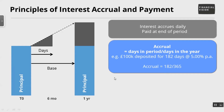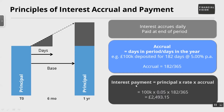Let's say you had £100,000 on deposit for six months, and that six month period happened to have 182 days in it. There are 365 days in a year, so the amount of interest you would get would be 182 divided by 365 — roughly just under a half of five percent. The actual interest payment is your principal times your annual rate times your accrual, where the accrual is the number of days for the deposit divided by the number of days in the year — days over base.